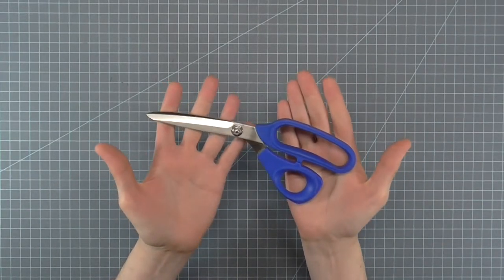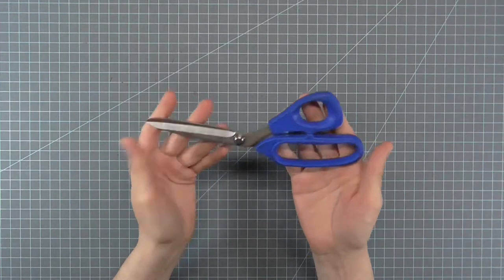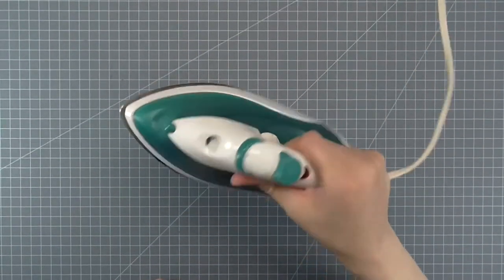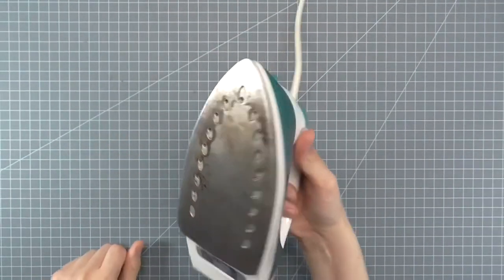Scissors that will cut Buckram. Do not use fancy fabric shears for cutting Buckram. You'll also need a dry iron. Either empty out the water or turn off the steam.